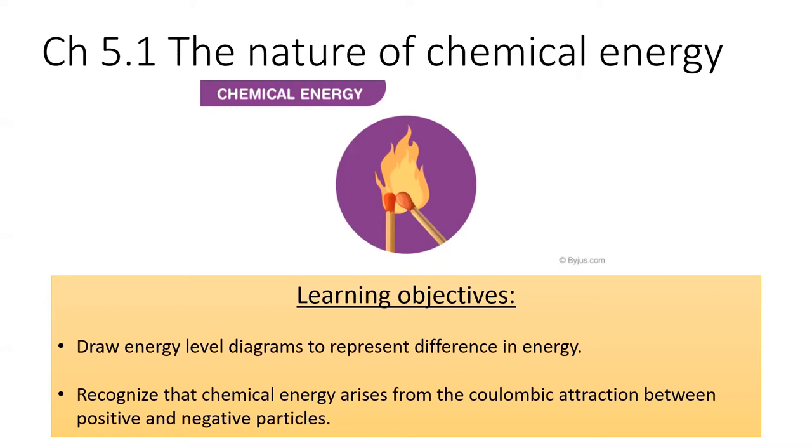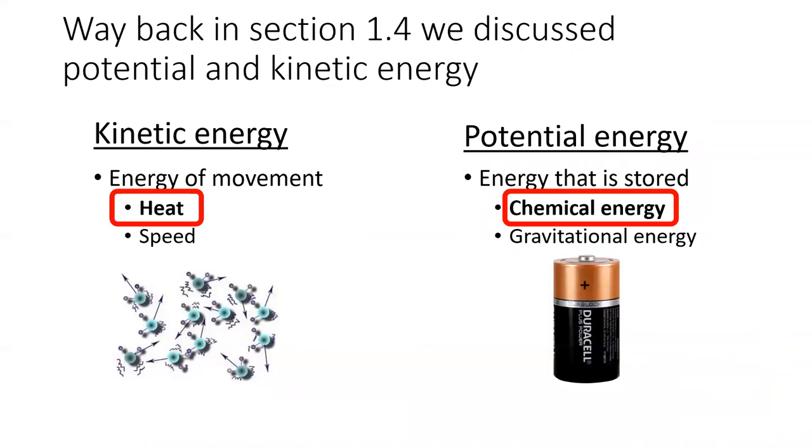The first section of this chapter lays the foundation for how we think about and visualize energy. In chapter 1, we identified two kinds of energy, kinetic and potential.